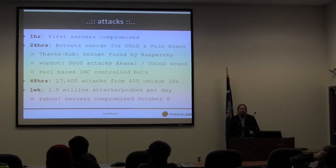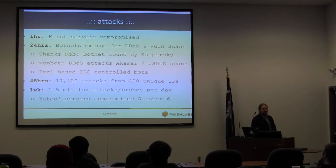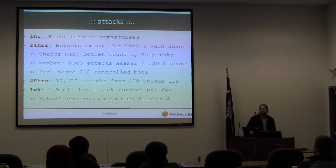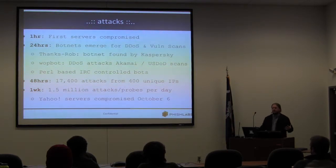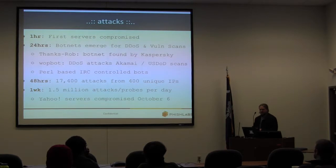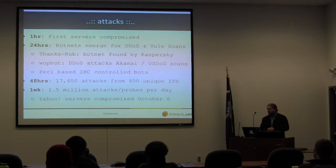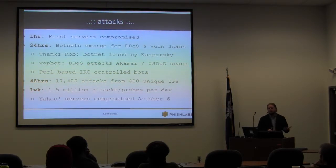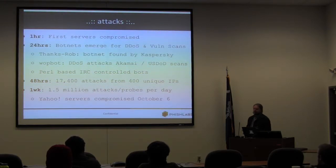Let's talk about the attack history as this exploit was introduced to the wild. Within the first hour, you start seeing the first servers compromised. After 24 hours, botnets emerged for DDoS and vulnerability scanning. One of the first security researchers who published the proof of concept code, his name was Rob — the miscreants set up one of the first botnets from this exploit named after him.